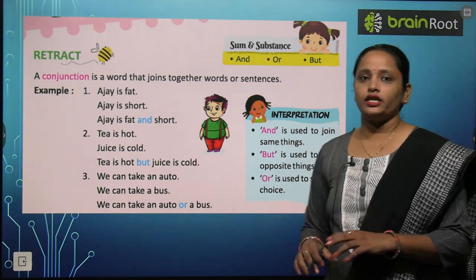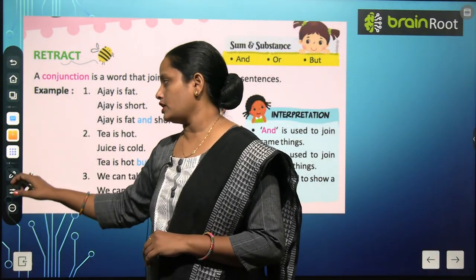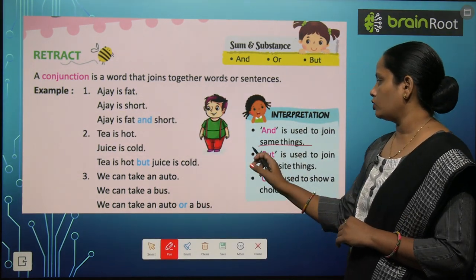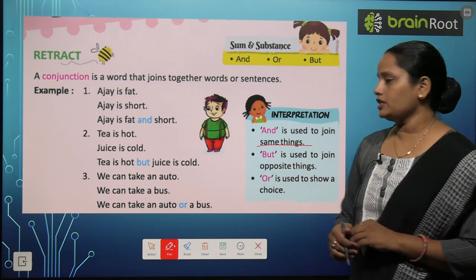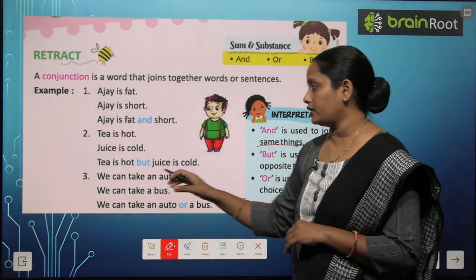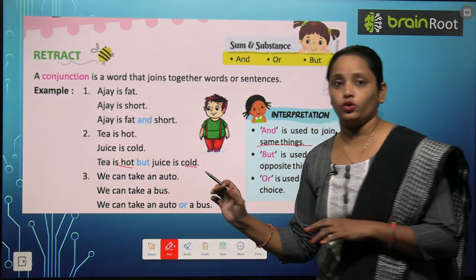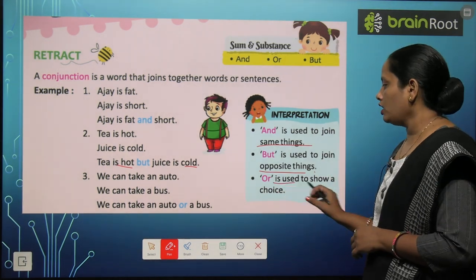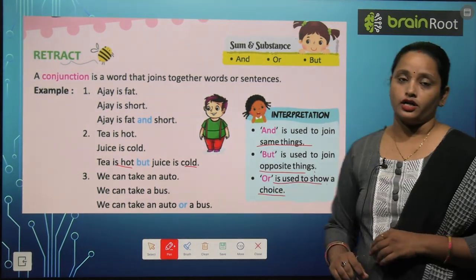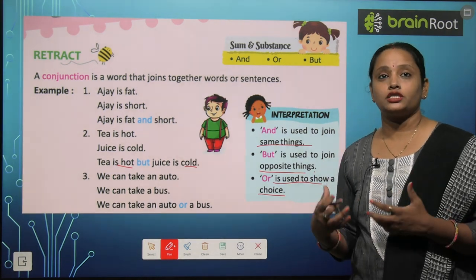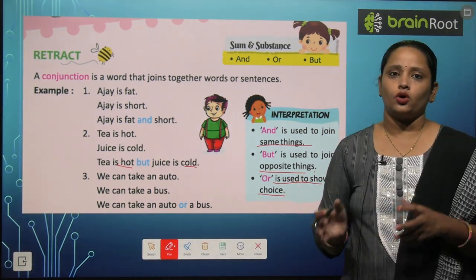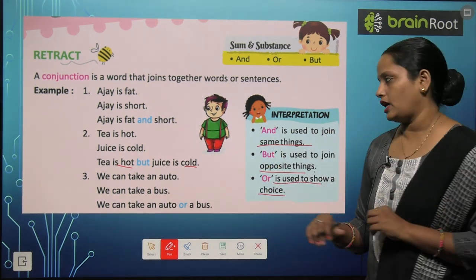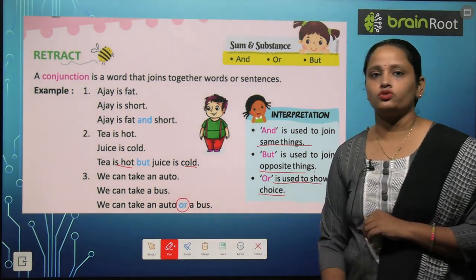And is used to join same things. And को हम तब use करते हैं जब दो एक जैसी चीज़ों को join करना हो। But is used to join opposite things — जैसे hot और cold, दोनों एक दूसरे के opposite हैं। Or is used to show a choice — जब दो में से एक choose करना हो, तो हम 'or' use करते हैं।